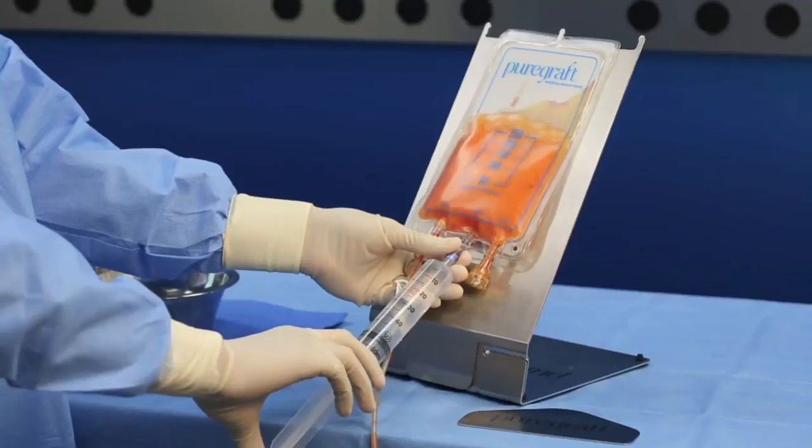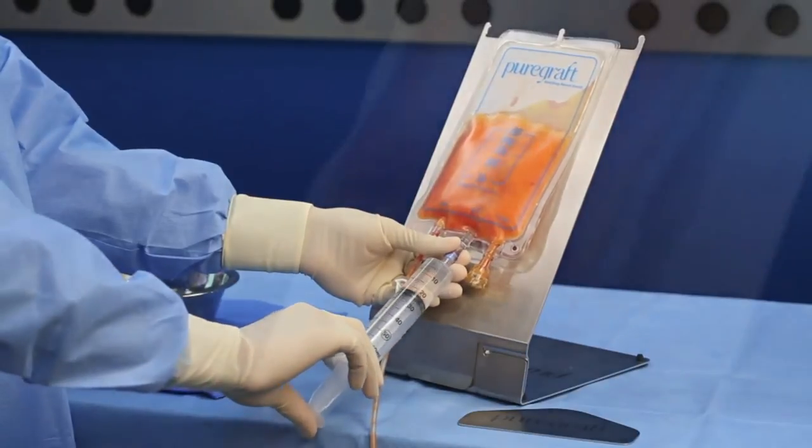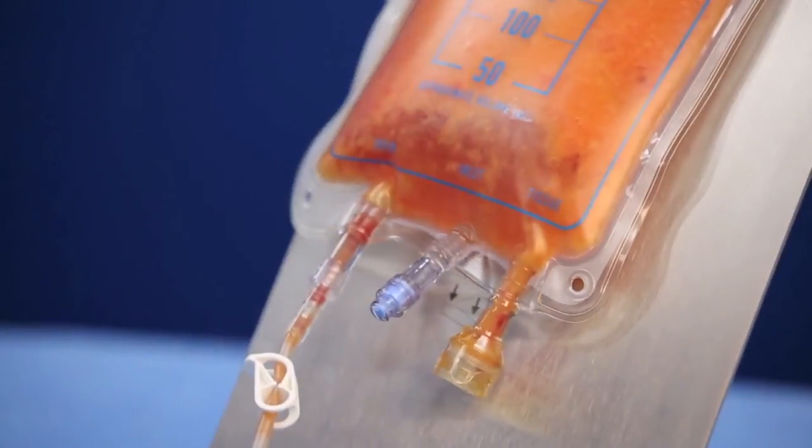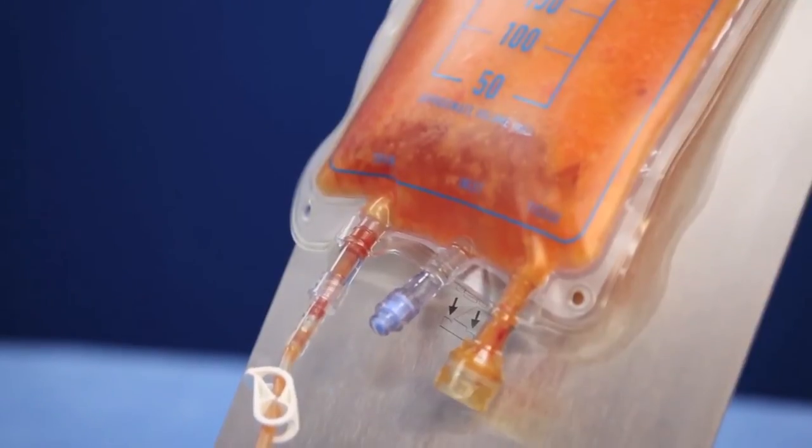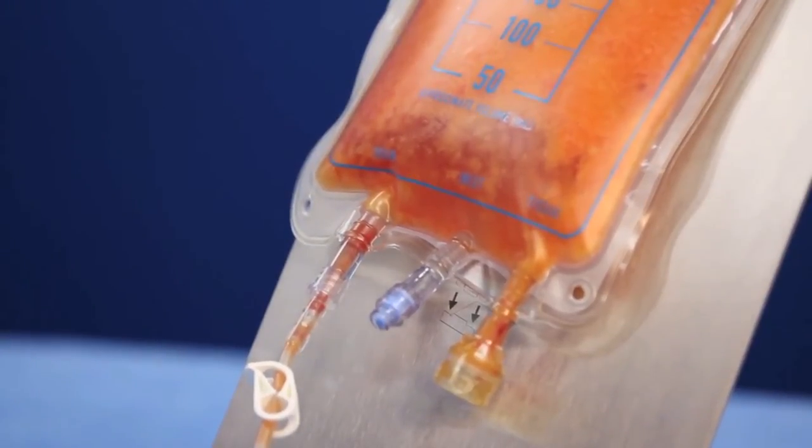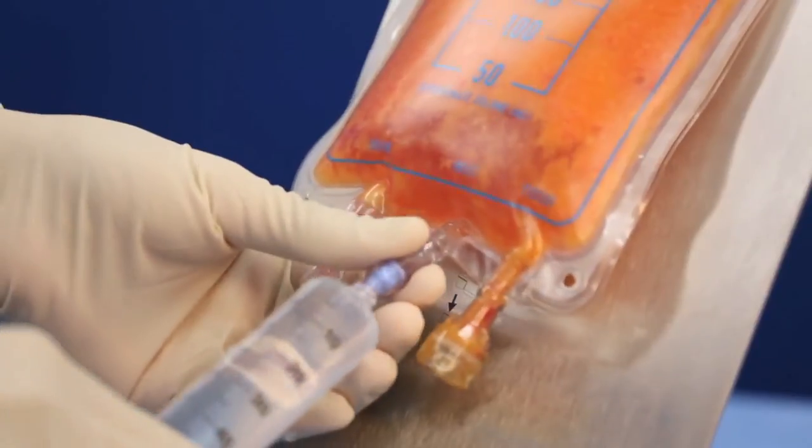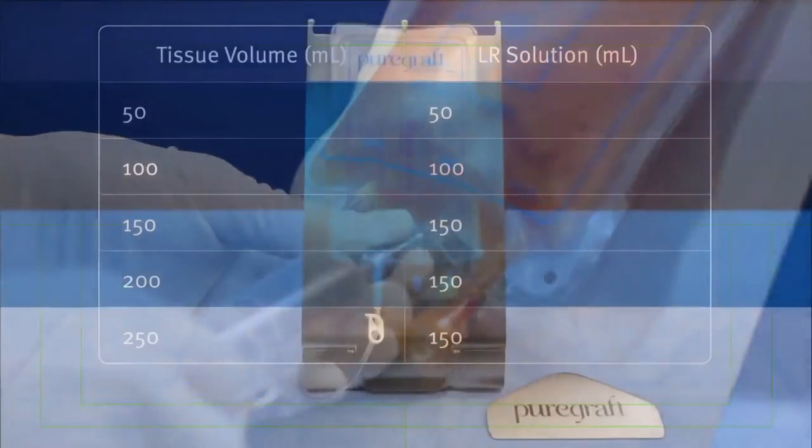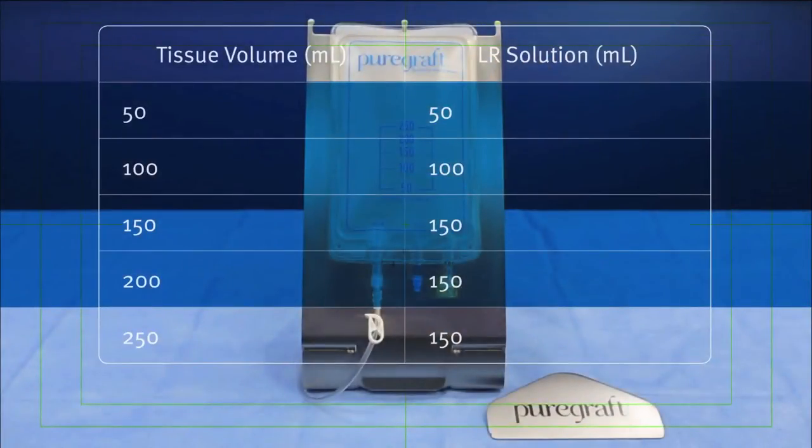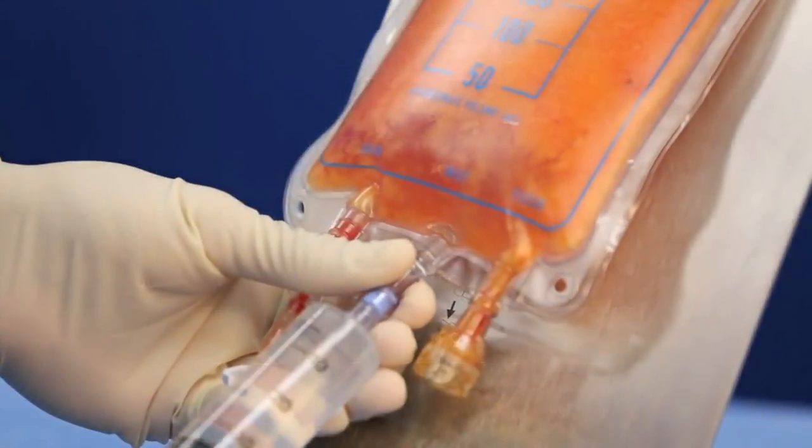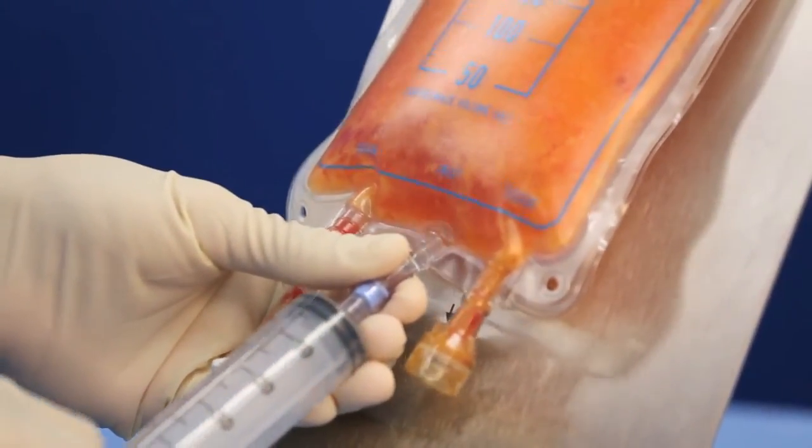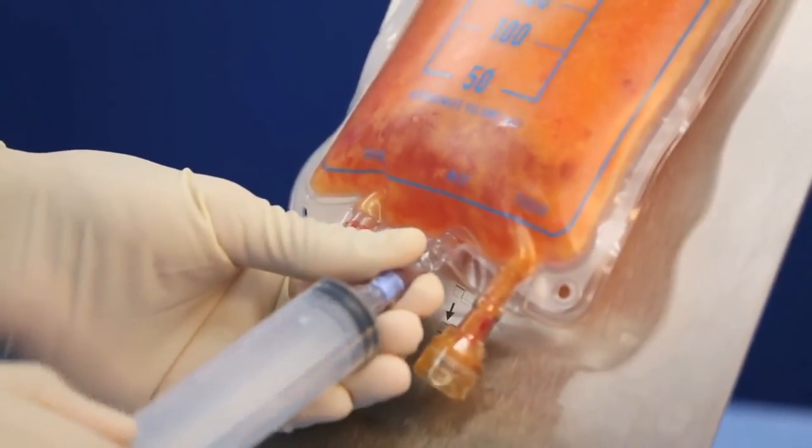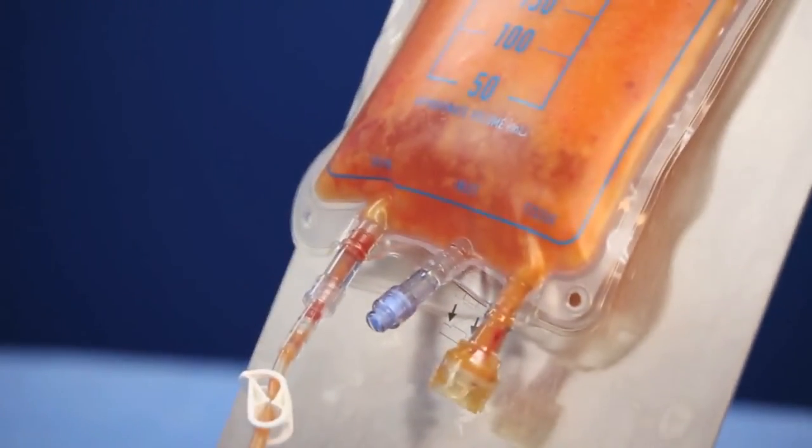Two wash cycles must be completed using lactated Ringer's solution irrespective of the method you choose. For the syringe method, empty the contents of the lactated Ringer's bag into a sterile container and aspirate lactated Ringer's into a 60 milliliter luer lock syringe. An approximate 1 to 1 ratio of lactated Ringer's to tissue should be used for graft volumes of up to 150 milliliters. Use 150 milliliters of lactated Ringer's for all larger tissue volumes.